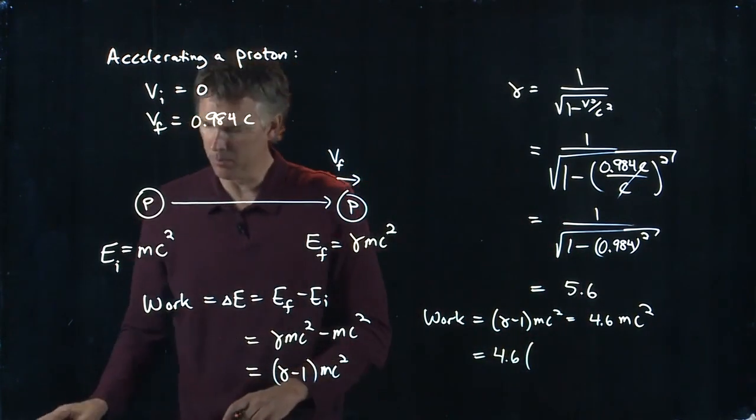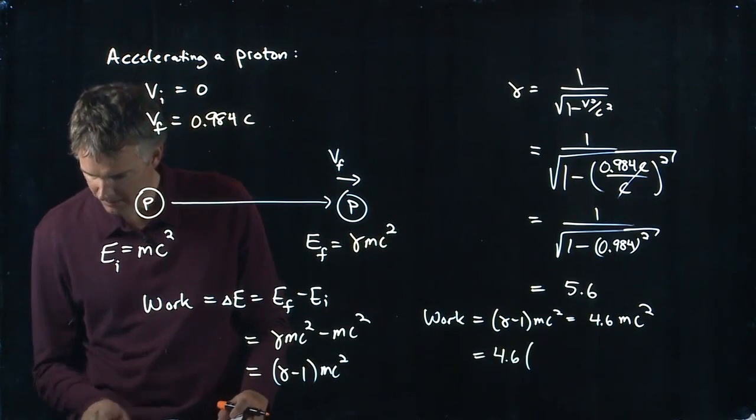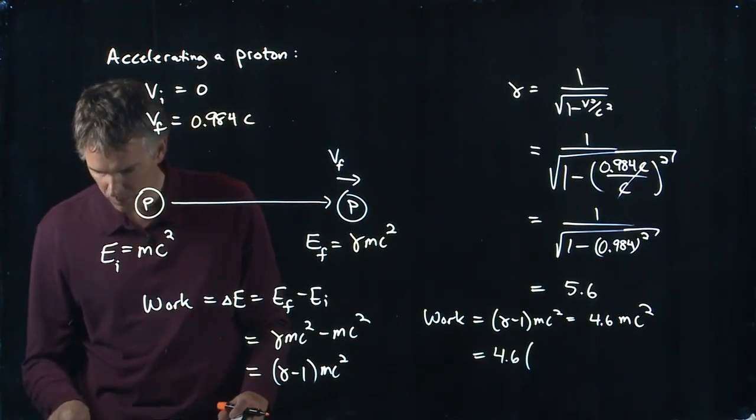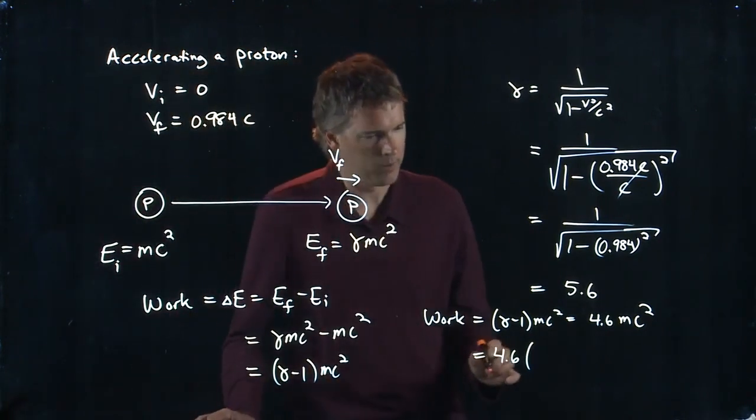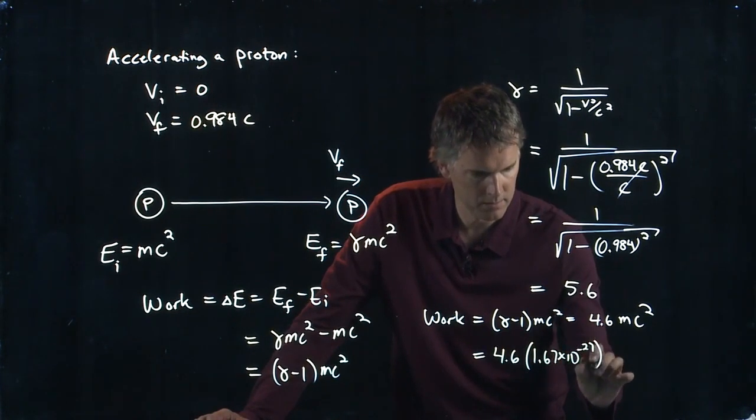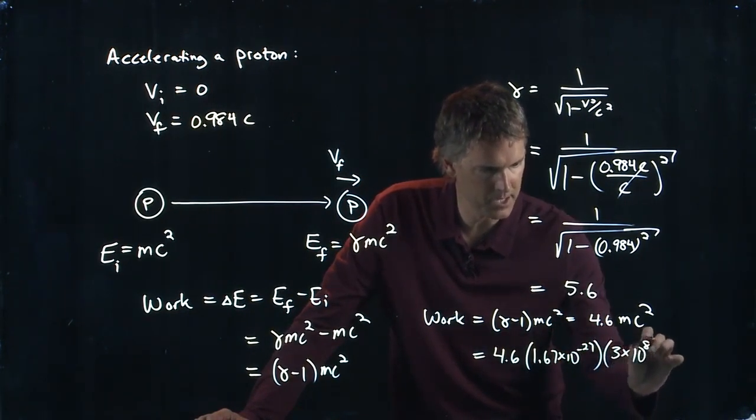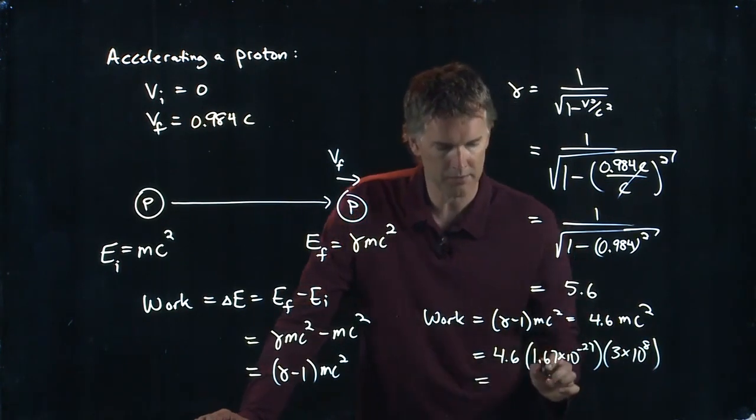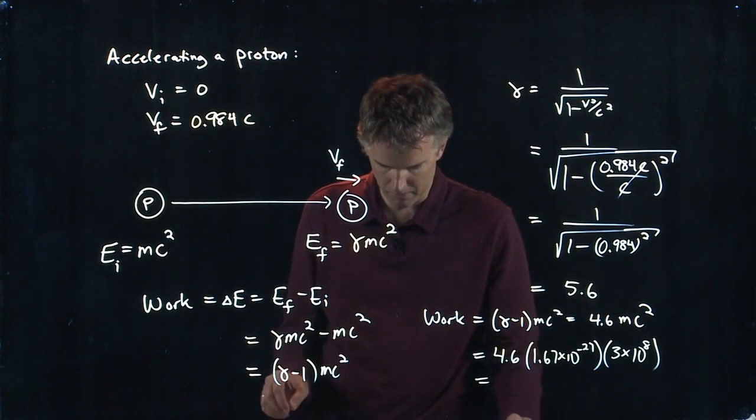And if we flip open the inside cover of your book, you can figure out what the rest mass of a proton is. It's 1.67 times 10 to the minus 27 kilograms. We're going to multiply by C squared, 3 times 10 to the 8th. We're all in SI units here. And so we can punch this into our calculator and see what we get.